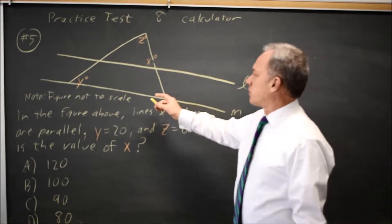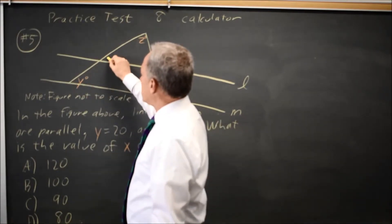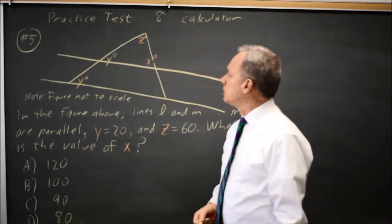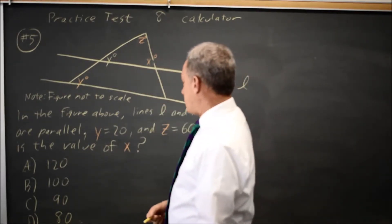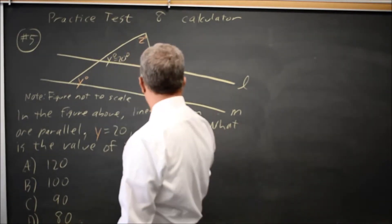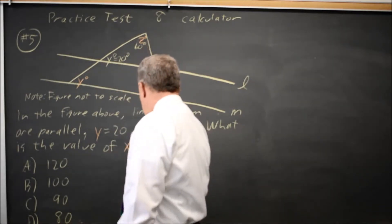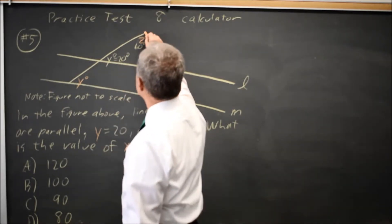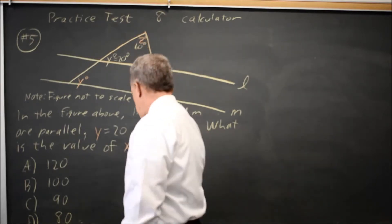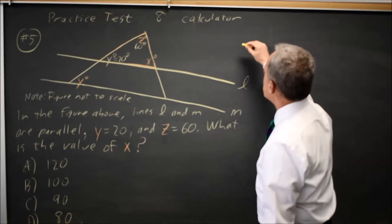Since L and M are parallel, the angle that's Y and this angle here, which I'll also label as Y, have to be equal, so now we know Y equals 20 degrees. We were given that Z is 60 degrees, so the small triangle at the top has angles of 20 and 60 and X.